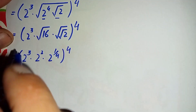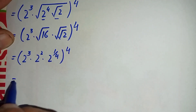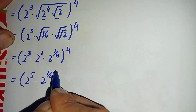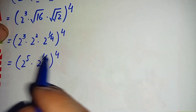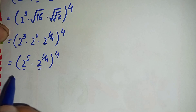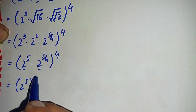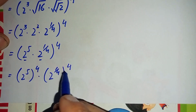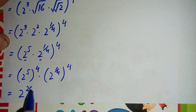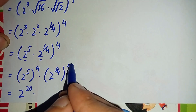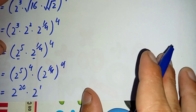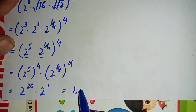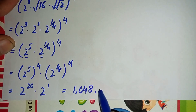Here these two bases are the same so we will add their powers, so it will become two raised to power three plus two is five, times two raised to power one over four, whole raised to power four. Here we will split this power over the numbers, so this will become two raised to power five, whole raised to power four, times two raised to power one over four, whole raised to power four. We will multiply the powers with each other, so this will become two raised to power four times five is twenty, times — here you will cancel this power — so this will become only two raised to power one.